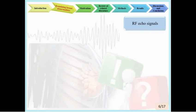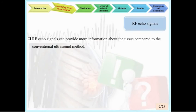A newer method involves examining signals recorded from tissue using radiofrequency. Several studies have been performed on the use of RF time series features of recorded echo signals from soft tissues with B-mode imaging, for accurately detecting and typing related tissue. In this method, there is no need to model the texture or calculate and estimate model parameters. Results show that RF echo signals can provide more information about tissue compared to conventional ultrasound methods.